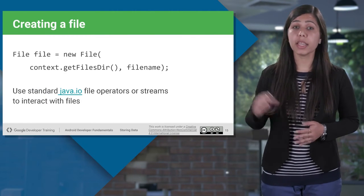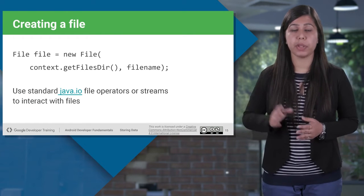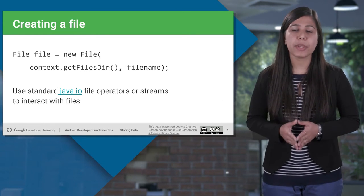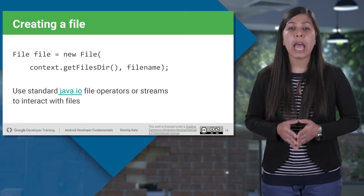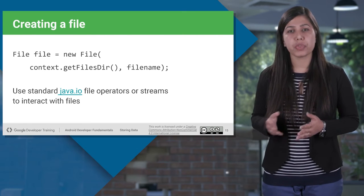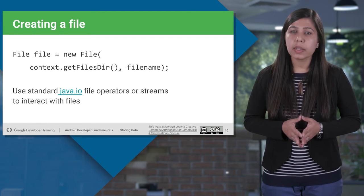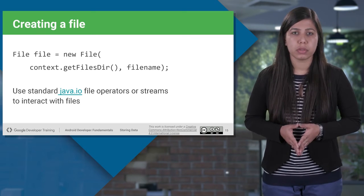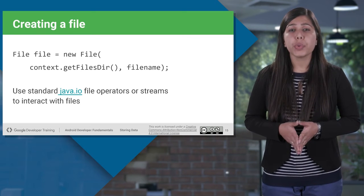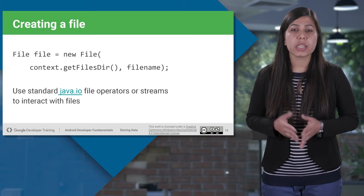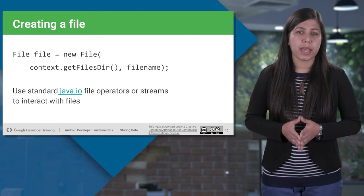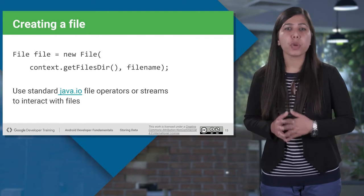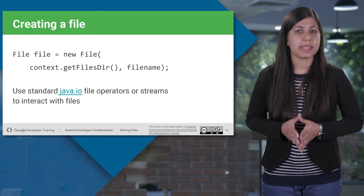Here is an example showing how a new file can be created by specifying the file and the name of the directory where the file needs to be created using the file constructor. You can also use standard Java input/output APIs to read, write, and stream files from the Android file system.